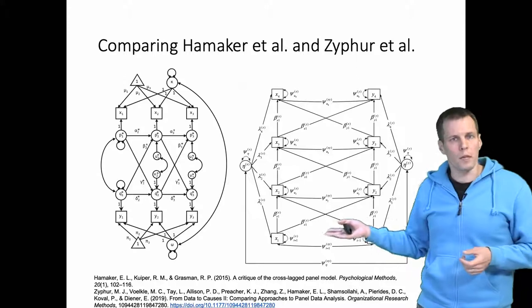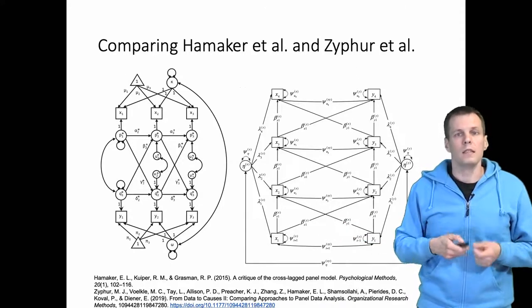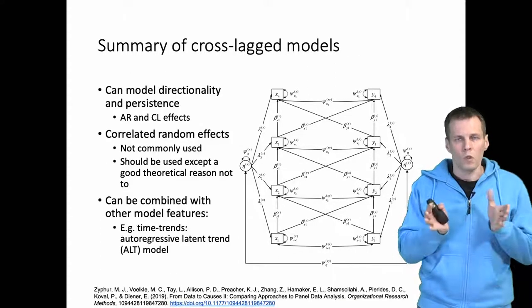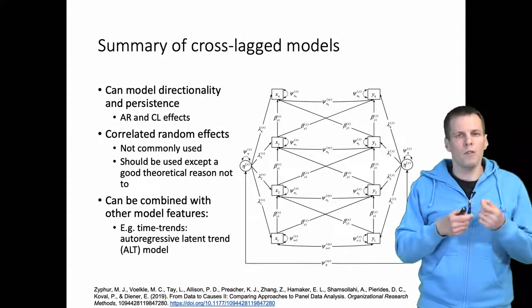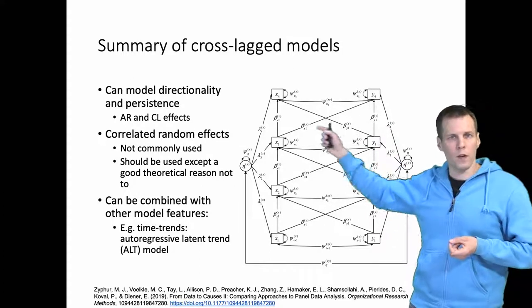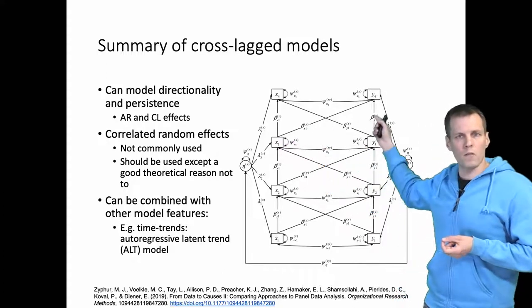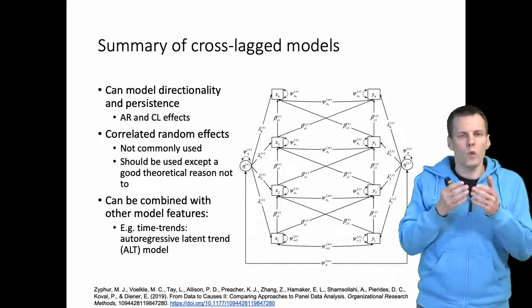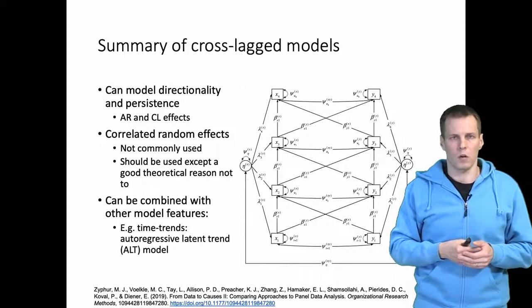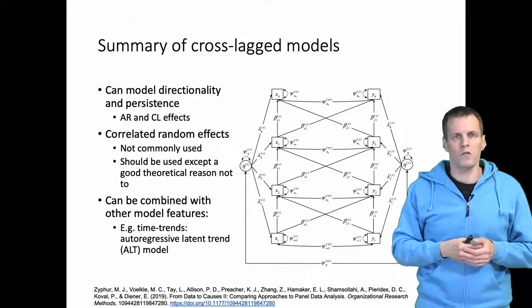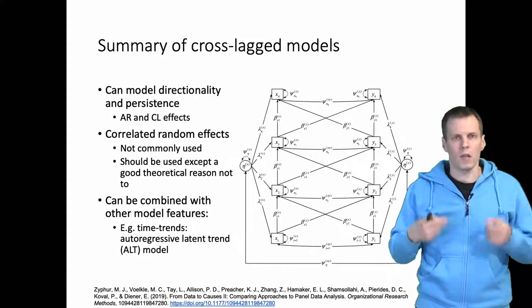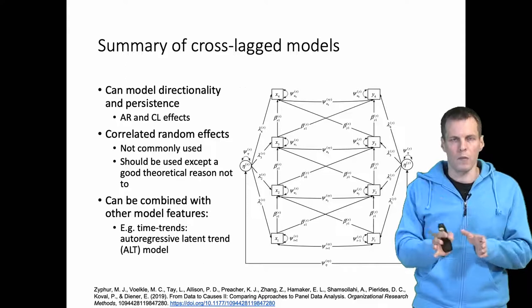To summarize, when would this kind of model be useful? We can model the directionality and persistence of effects. We have the autocorrelation coefficients from Y to Y, from X to X, and we have the cross-lagged coefficients from X to Y and from Y to X. We have random intercepts, which makes this a correlated random effect model. These random intercepts are unfortunately not commonly used, but they pretty much should always be used because we really cannot assume away constant between-individual or between-company differences.